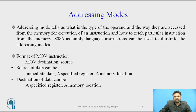And how to fetch a particular instruction from the memory. 8086 assembly language instructions can be used to illustrate the addressing modes, and the format of a particular example is a move instruction: MOV destination, source — where the source of data can be immediate data, a specified register, or a memory location.